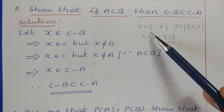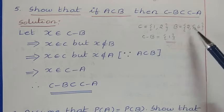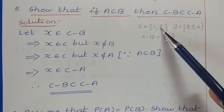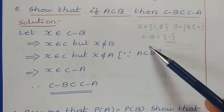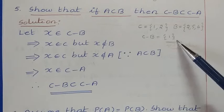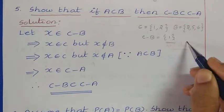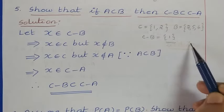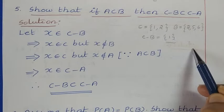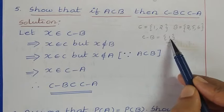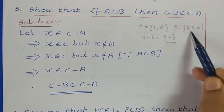If you look at the C and B sets here, in the C set we have the element 2, which is also there in the B set. That means we have to remove this 2 from the C set, so the remaining is 1. So that is nothing but C minus B. Here 1 belongs to C but 1 does not belong to B.